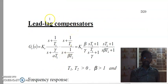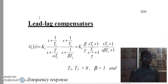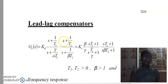In the previous classes, we have seen the lead compensator and lag compensator. Now we are going to see the lead-lag compensator. The lead-lag compensator Gc of S equals 1 plus S by T1, divided by 1 plus gamma times T1 — this is the lead compensator. The lag compensator is S plus 1 by T2, divided by S plus 1 by beta T2.